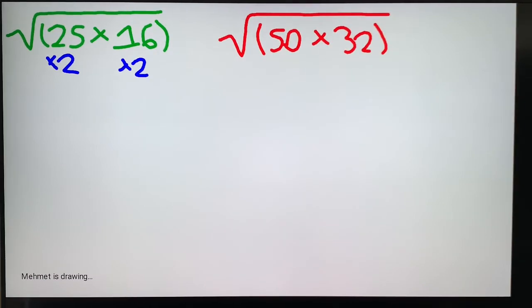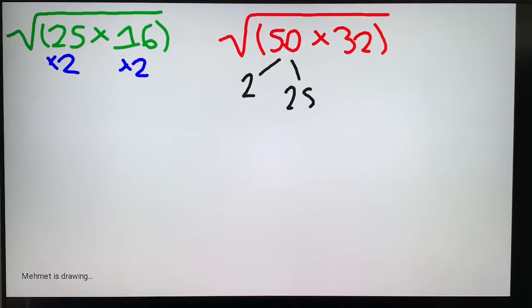If you were to solve this one, this 50 and 32 aren't perfect squares, so we can't do what we did before. However, it's still pretty easy once you figure it out. 50 can be broken into 2 and 25. 32 can be broken into 2 and 16.